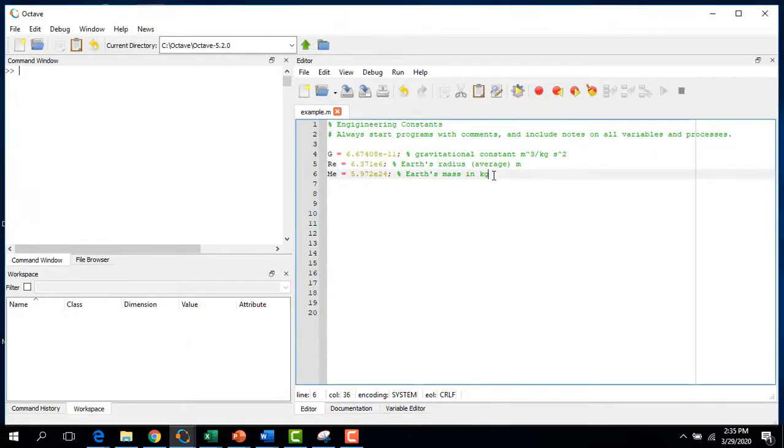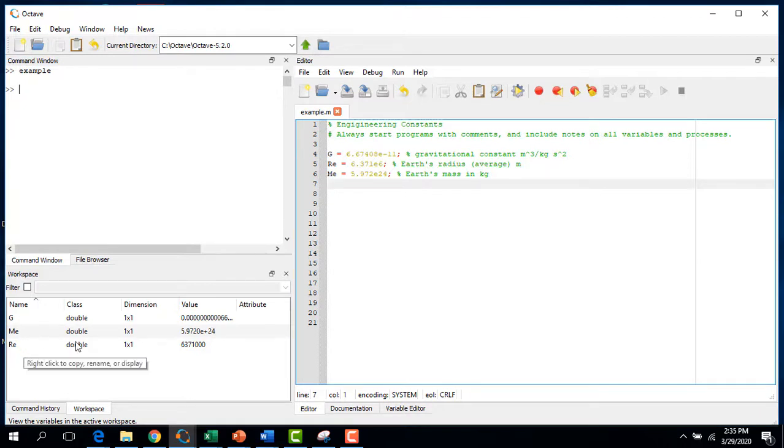As you're working on programs don't let yourself get too far before you compile it, before you run the program. Running this at first it doesn't look like anything has happened. But if you come down to my workspace you'll see that a few new variables have been added. And remember Octave automatically declares these depending on what they are, so these are all declared as doubles.